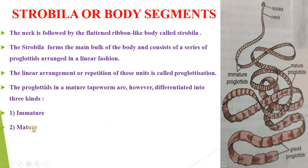Next is the mature proglottid. After the immature proglottids start the mature proglottids, numbering 100 to 150. The mature proglottids first develop male reproductive organs and these are then pushed back as they develop female reproductive organs, thus mature proglottids are hermaphrodite. They number about 300 to 400. The mature proglottids are squarish in shape, which is easily visible in the picture — you can see the shape is almost square-like.